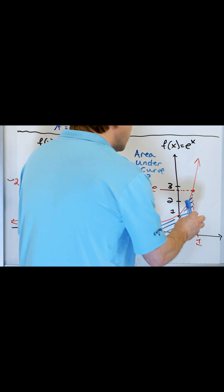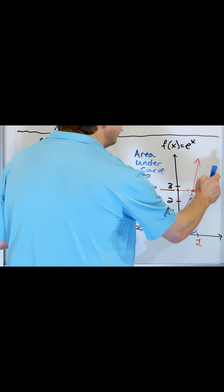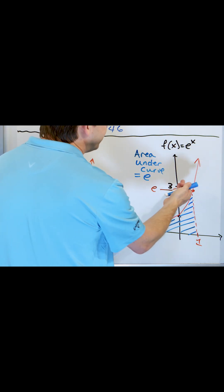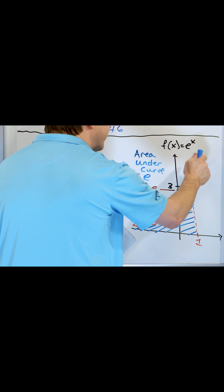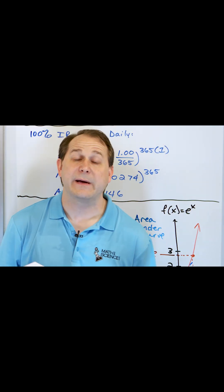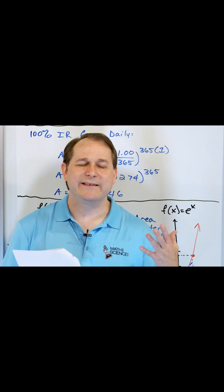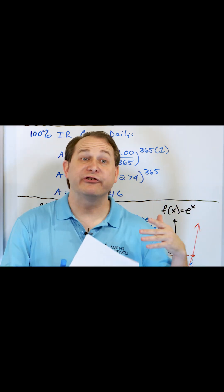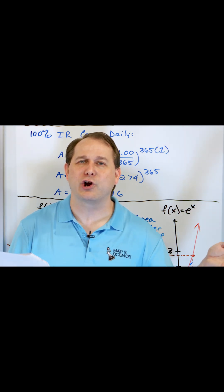So if I go over here and I'm looking at the number 2, then the value over here is e to the power of 2 or something like that, and the surface area underneath would be equal to whatever the value of the curve is at that point. The interesting thing about this — and it's really the only function that behaves this way — is that the slope of the curve at any point is equal to the value of the curve itself.